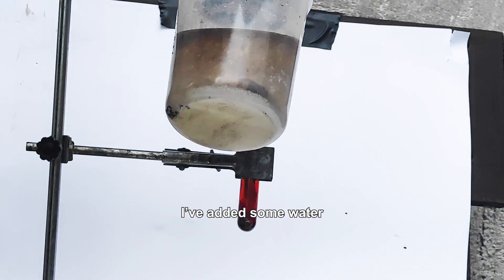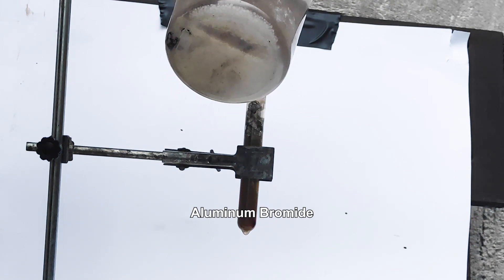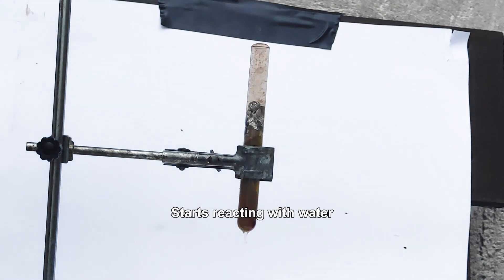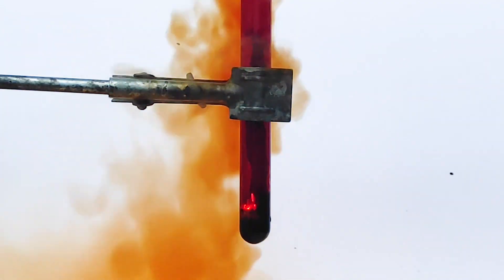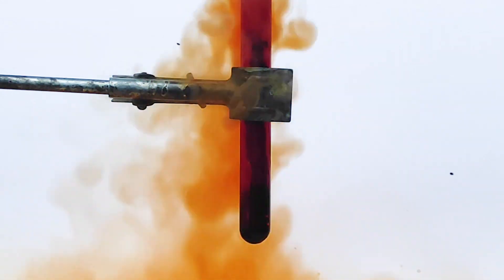After the reaction has been finished, I've added some water, and some fumes came out of the test tube. That's from aluminum bromide, which is the product of the reaction, starts reacting with water to produce hydrogen bromide. What's interesting is when we zoom into the reaction we can see something that looks like a miniature storm in a test tube.